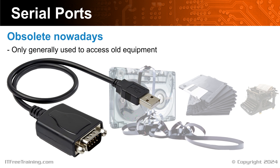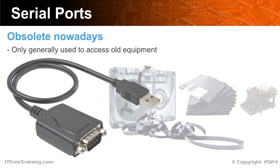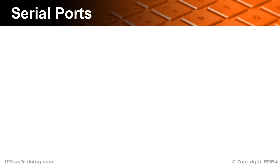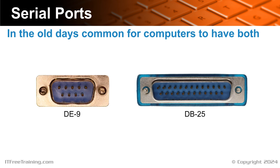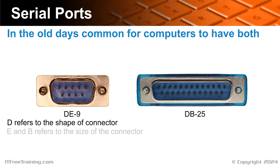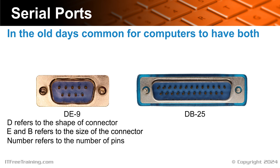Essentially, just have a basic understanding of how they work and where to find information about how to use them in the rare case you may need to use one. In the old days of computing, a computer would commonly have two serial ports: the smaller DE9 serial port and the larger DB25 serial port. The D in the connector refers to the shape of the connector. The E and B refer to the size of the connector, and the number at the end refers to the number of pins.